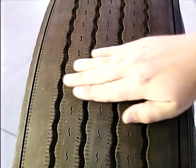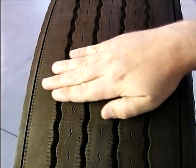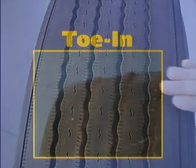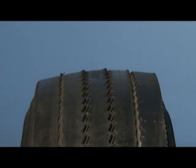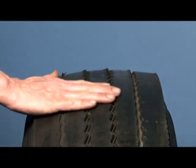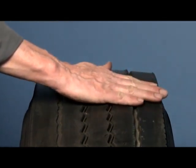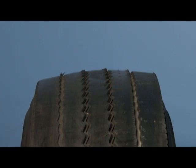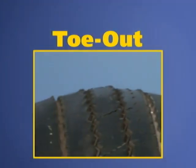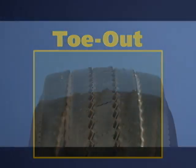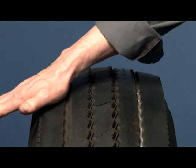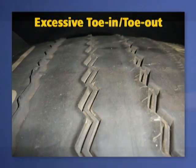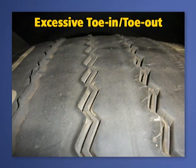If the toe is properly set, the steer tires will feel smooth and even when you move your hand across the tread surface. If the front tires have excessive toe in, a feathering wear will be created. This can be felt very easily with your hand. The tread will feel smooth when moving your hand inboard across the tread, but you will feel a drag or sharp edge or resistance when moving your hand outboard across the tread. If the front tires have excessive toe out, the opposite will be evident — the sharp edge or resistance will be felt going inboard with no resistance felt while going outboard. This wear on the tread occurs due to the shearing action created by side forces resulting from excessive toe in or toe out.